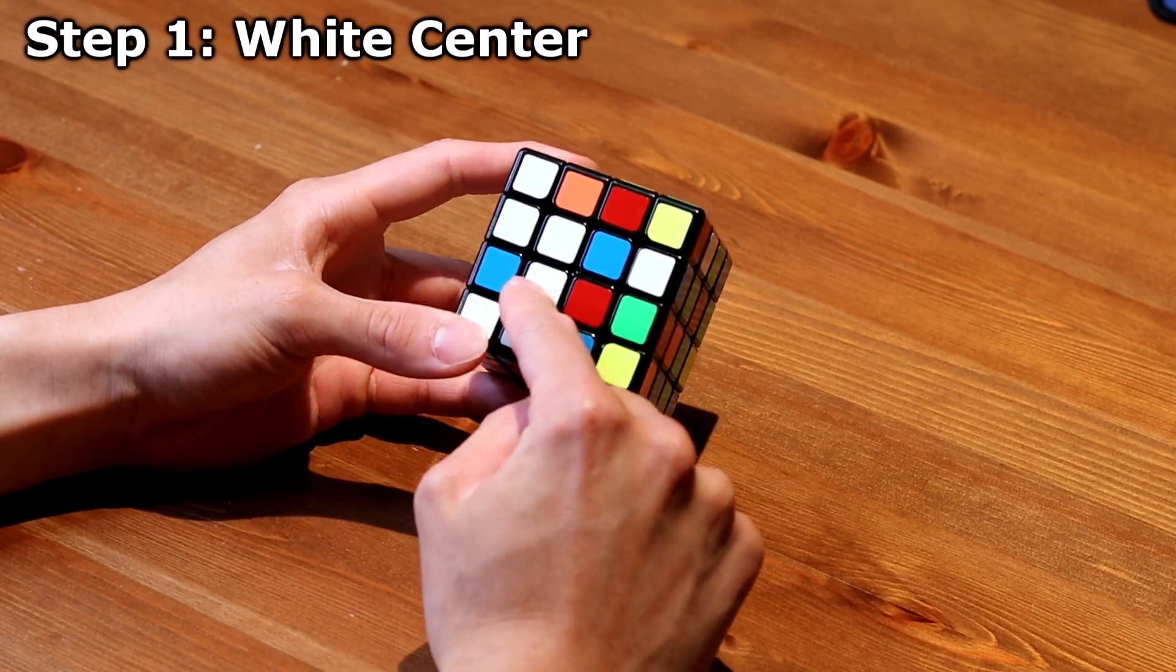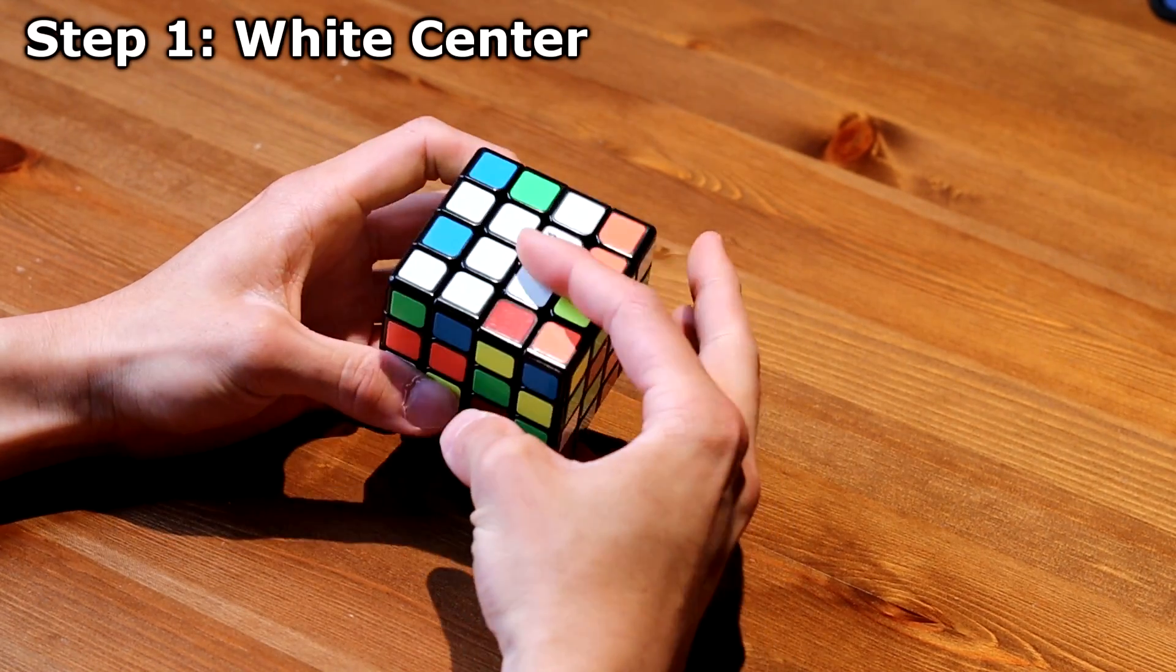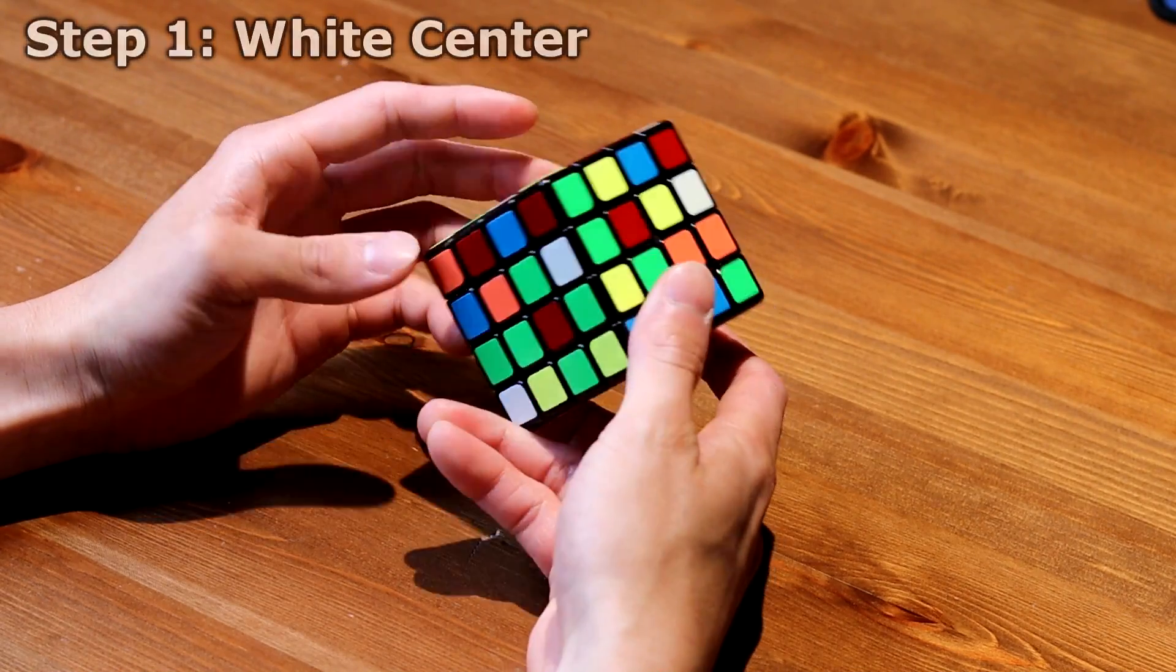Okay, so I see that I have a 2x1 block right here. I see two centers. I line them up and boom, that white center is done. Very fast.